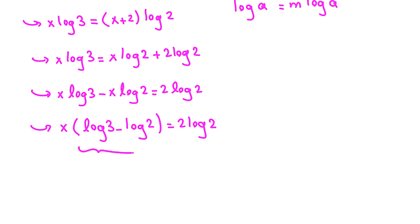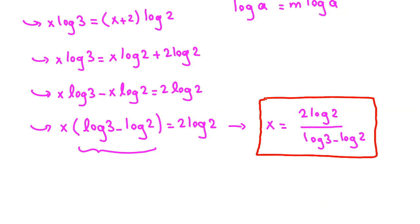Now if we divide both sides by this term, we have x equals 2 log 2 over (log 3 minus log 2). So our answer is 2 log 2 over (log 3 minus log 2).